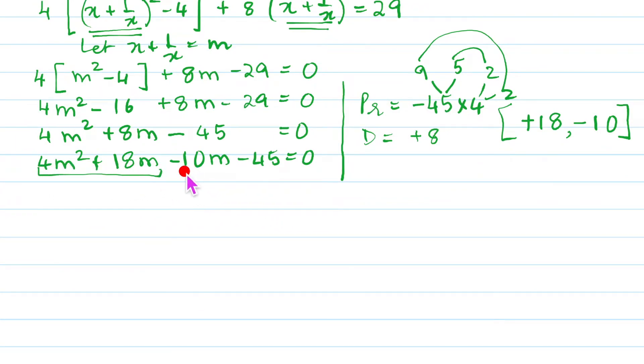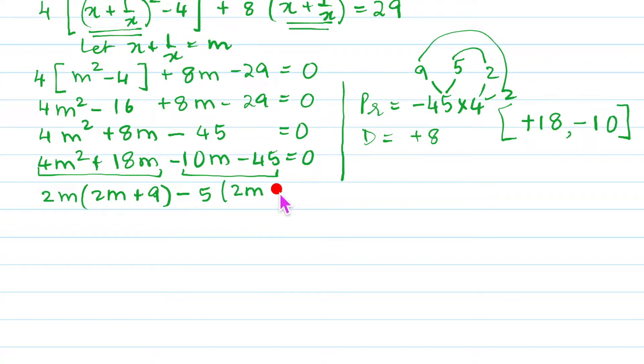So 4m² + 18m - 10m - 45 = 0. Group this and this. So it becomes 2m(2m + 9) minus 5(2m + 9). That is equal to 0. And now we will take this common here. So that gives us (2m + 9)(2m - 5) = 0. I hope you are writing same time. If you are writing, write in the comment box yes we understand and we are writing.